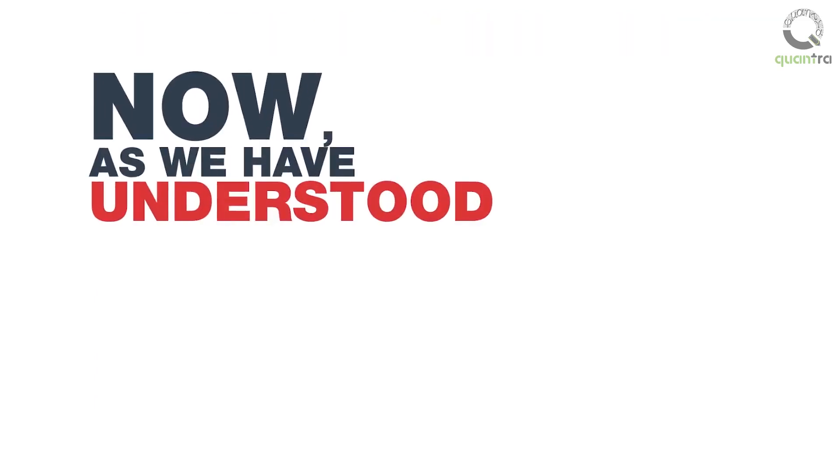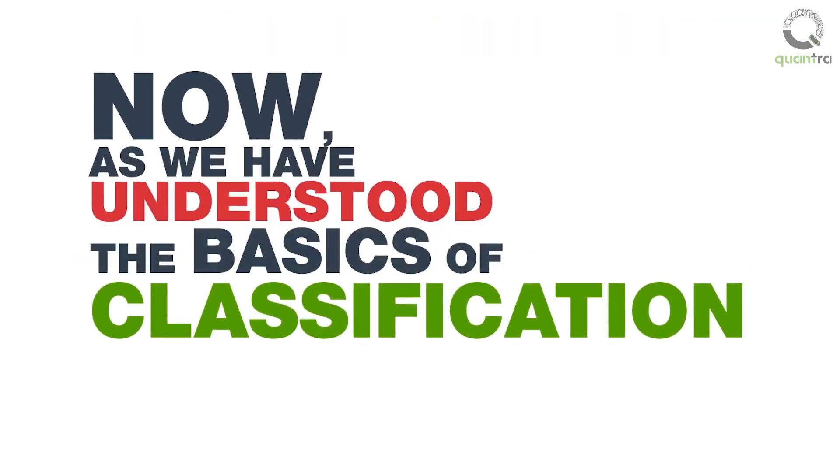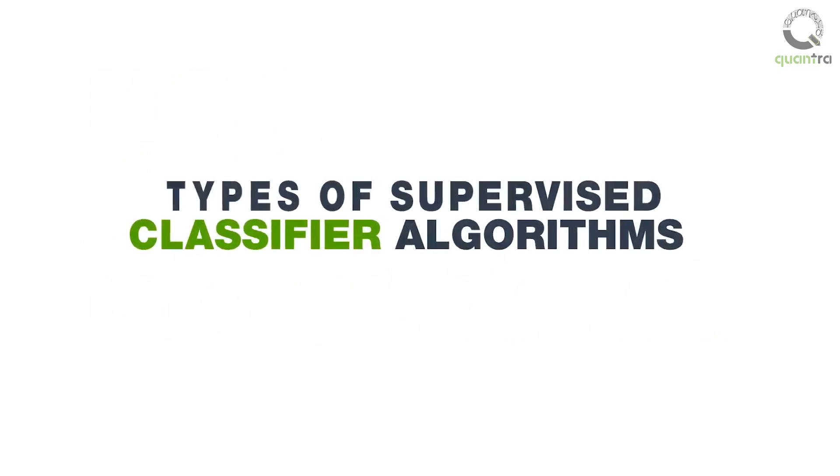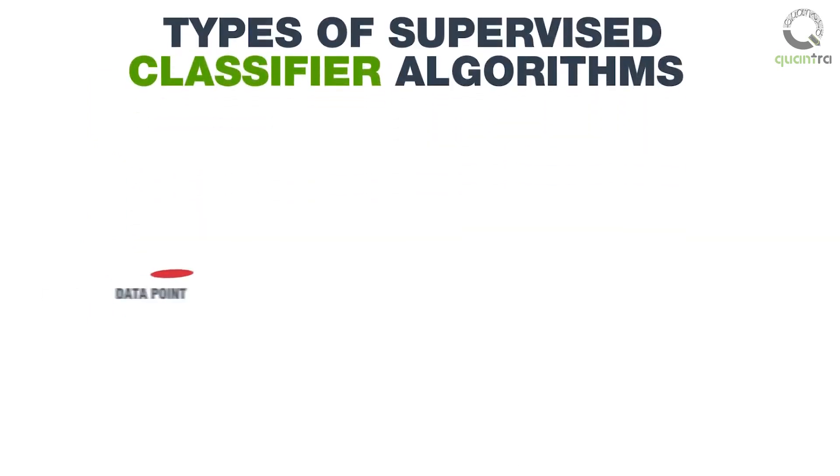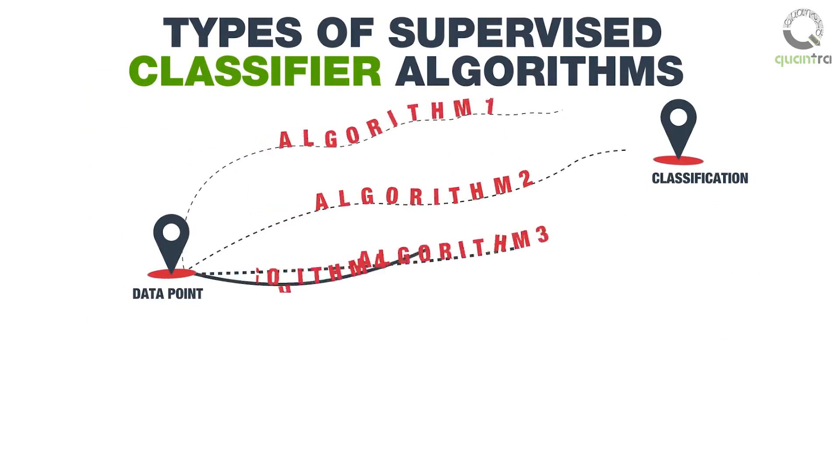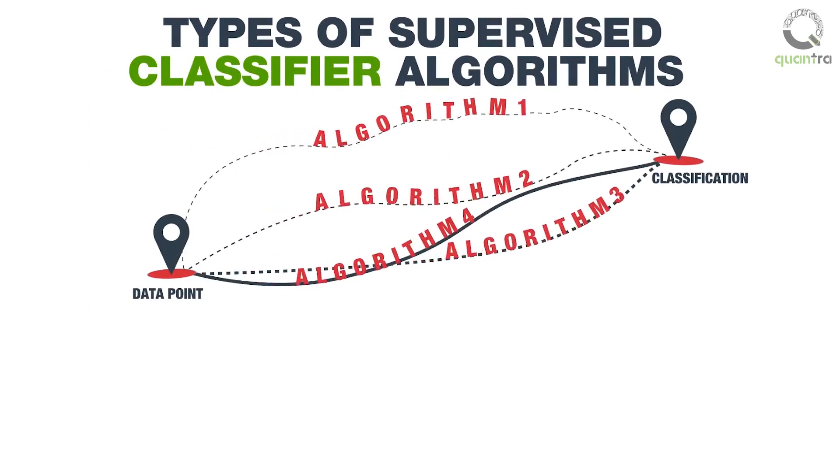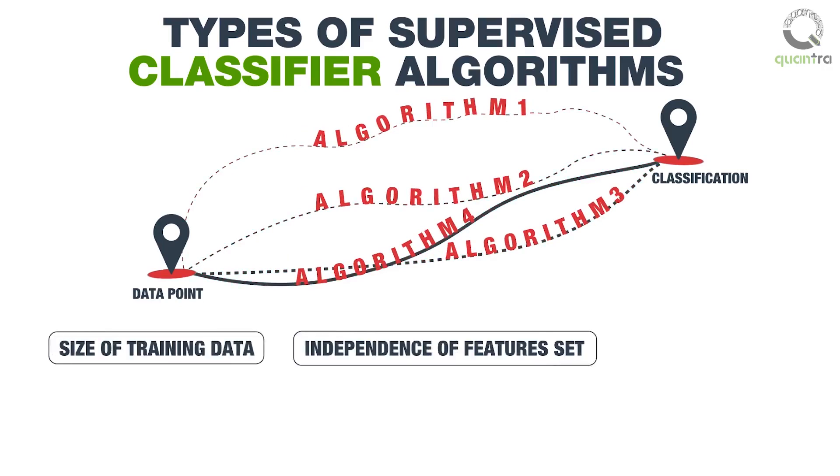Now, as we have understood the basics of classification, let us learn about some types of supervised classifier algorithms. These algorithms employ different approaches to classify the data in predefined categories. Each of these algorithms have some advantages over others and are chosen based on various parameters, such as size of training data, independence of feature set, and system speed among others.